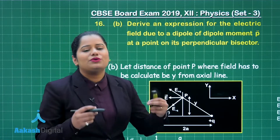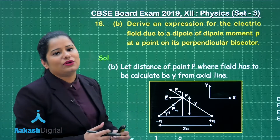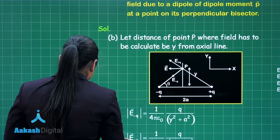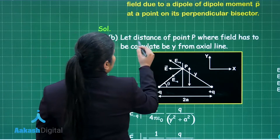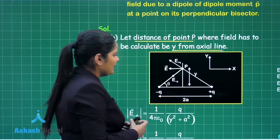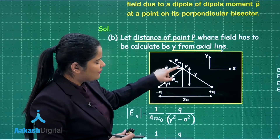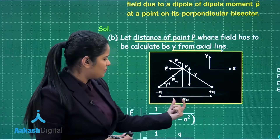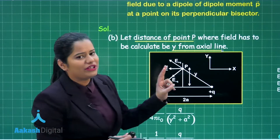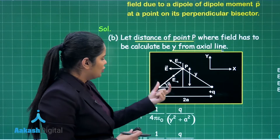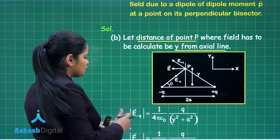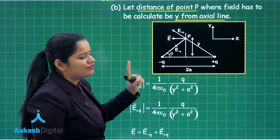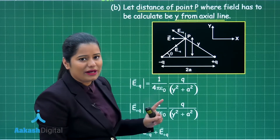We need to find out the electric field on the equatorial line of an electric dipole. We take a point P at a distance y from the axial line. Here we have a negative charge and a positive charge separated by a small distance 2a. At point P, we will calculate the electric field due to both charges. The electric field at point P due to the negative charge is k·q / r².